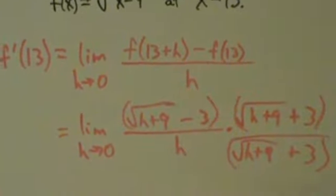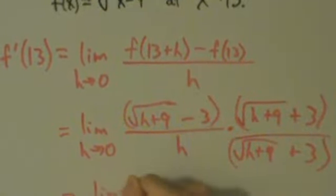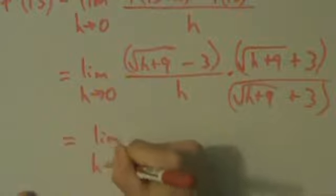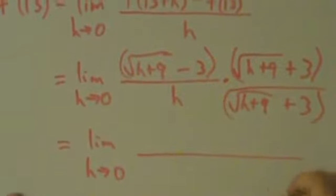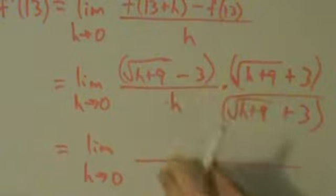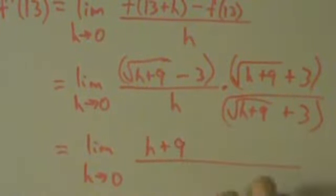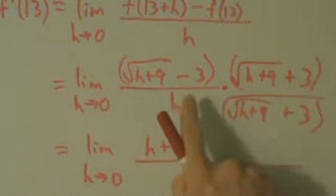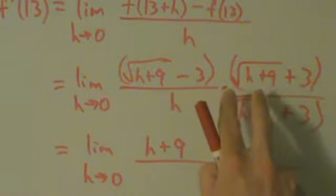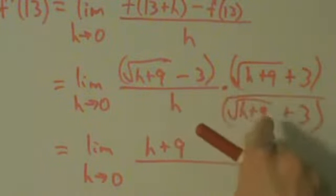Okay, so how does that help us? Well this equals the limit as h goes to 0 of what? So on the top, we just FOIL. All right, first gives us h plus 9. All right, outer is plus 3 root of h plus 9. Inner is minus 3 root of h plus 9. So outer and inner cancel, and that's the idea.